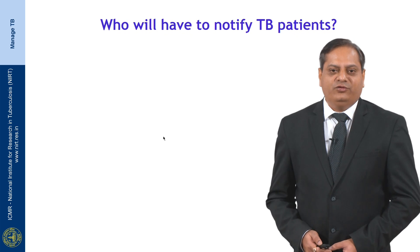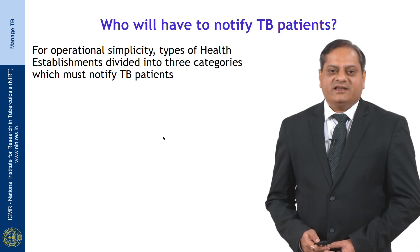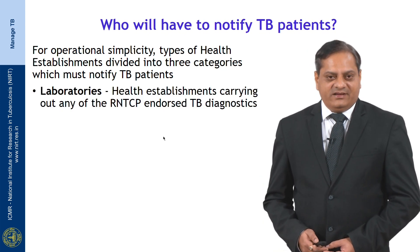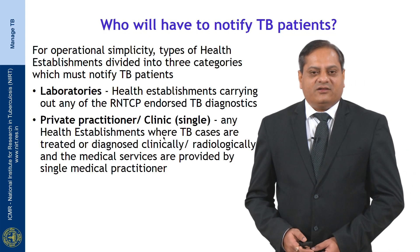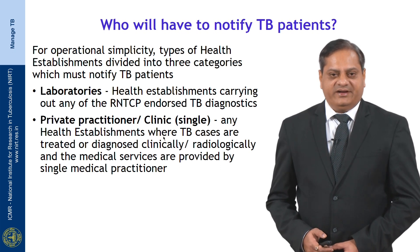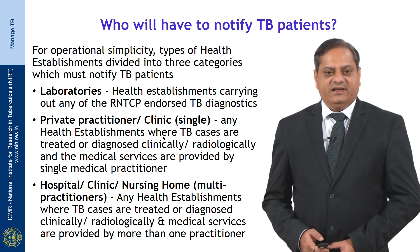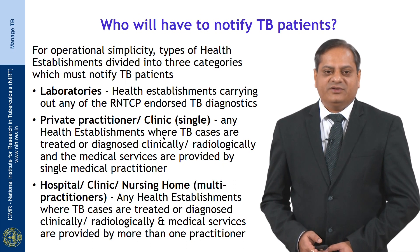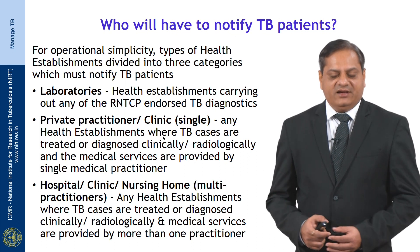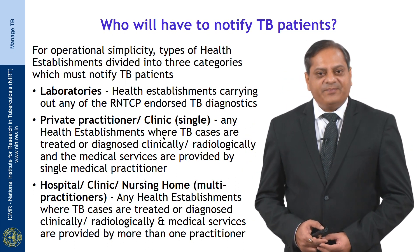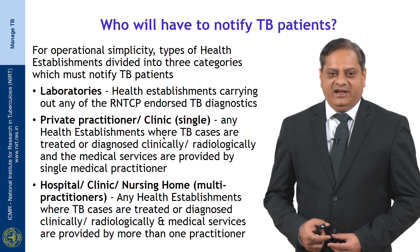Who is expected to notify TB patients? Health establishments are divided into three categories. First, laboratories where RNTCP-endorsed diagnostics take place and TB patients are diagnosed. Second, private practitioners or clinics — any health establishment where a TB patient is treated or diagnosed clinically or radiologically by a single medical practitioner. Third, hospitals, clinics, and nursing homes — multi-practitioner facilities where more than one treating physician is diagnosing or treating patients.